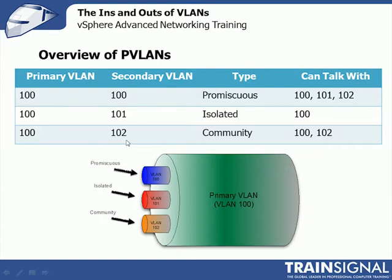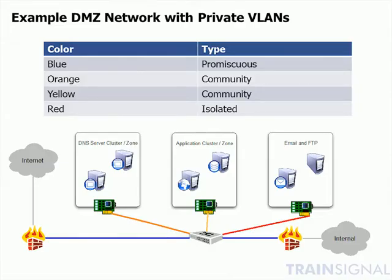Here's a quick DMZ network example. We have firewalls in blue — these are promiscuous, so anything can talk to them and vice versa. Orange is a community: a cluster of DNS servers that do zone transfers between each other need to talk to each other and to the firewall, so we put them in a community. Yellow is another community VLAN for an application cluster — they can talk to each other and the firewalls but not to anybody else. Finally, isolated red: a single email server and a single FTP server that only need to talk to the firewalls. That shows how we tier this.